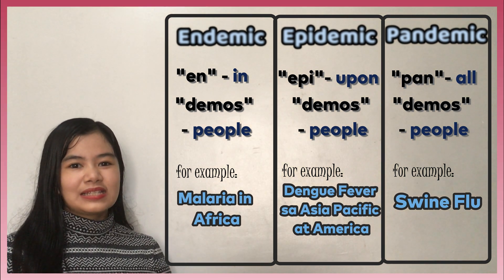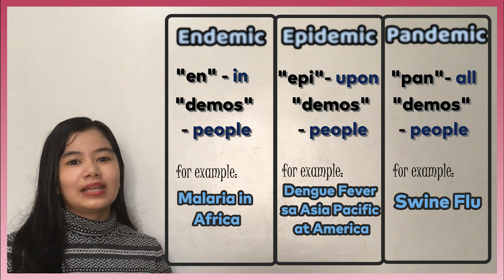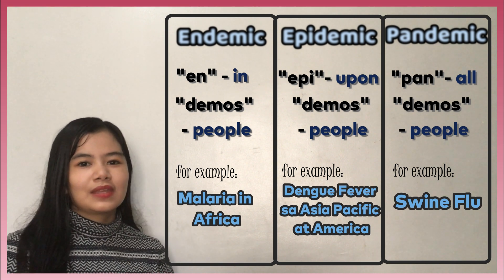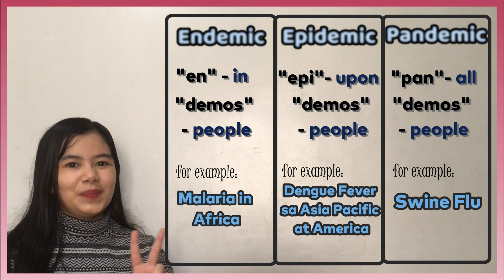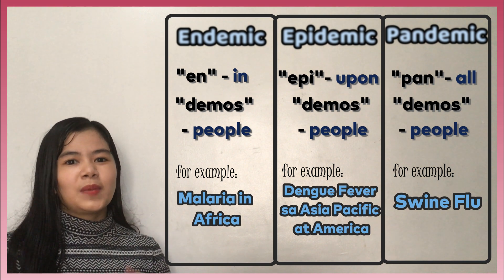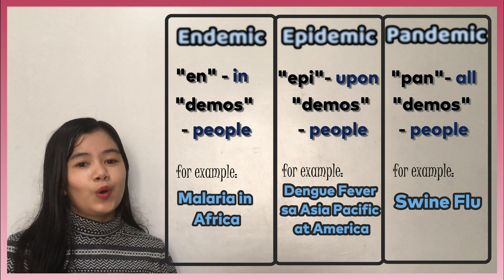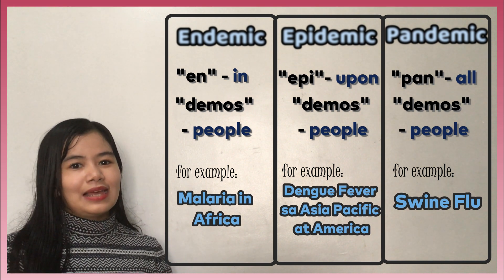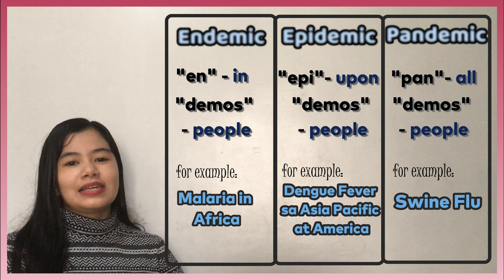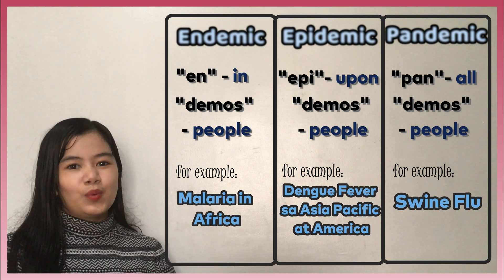Sa madaling salita, ang endemic ay isang sakit na pamalagian o matagal nang lumalaganap sa isang populasyon. Ang epidemic naman ay isang sakit na mabilis na lumalaganap sa iba't-ibang rehyon o komunidad. At ang pandemic ay isang sakit na lumalaganap sa buong mundo.